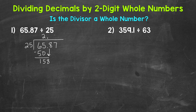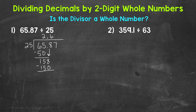Now we bring down and we have 158. We repeat, going back to divide. 158 divided by 25 — how many whole groups of 25 in 158? 6 — that gets us to 150. Multiply: 6 times 25 is 150. Subtract: 8 minus 0 is 8, 5 minus 5 is 0, and 1 minus 1 is 0, so 158 minus 150 is 8. Then we bring down and we have 87.